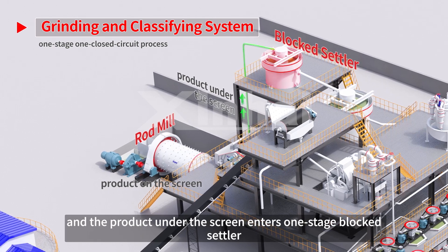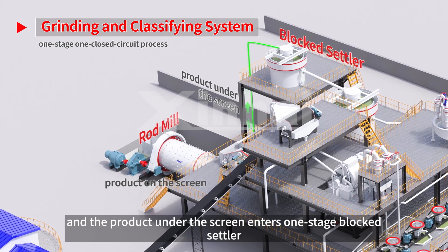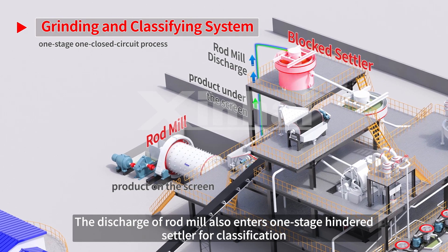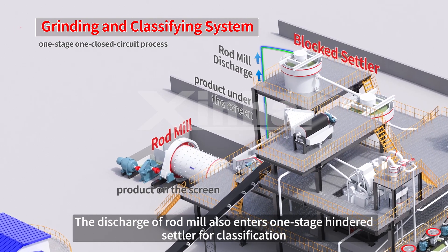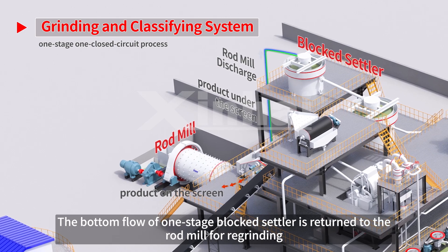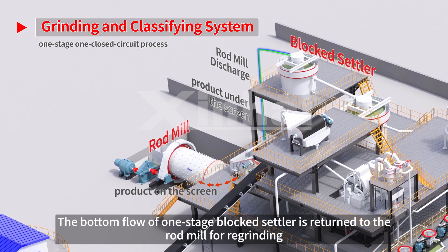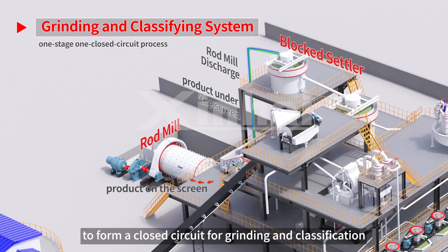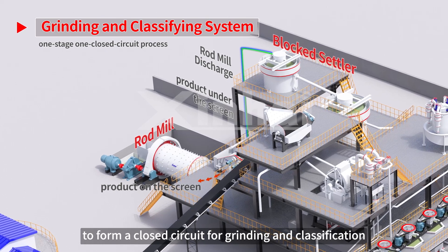The product on the screen goes to the wet rod mill for grinding, and the product under the screen enters the one-stage hindered settler. The discharge of the rod mill also enters the one-stage hindered settler for classification. The bottom flow of the one-stage hindered settler is returned to the rod mill for re-grinding, forming a closed circuit for grinding and classification.